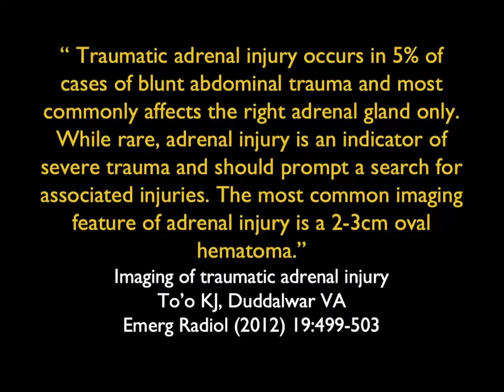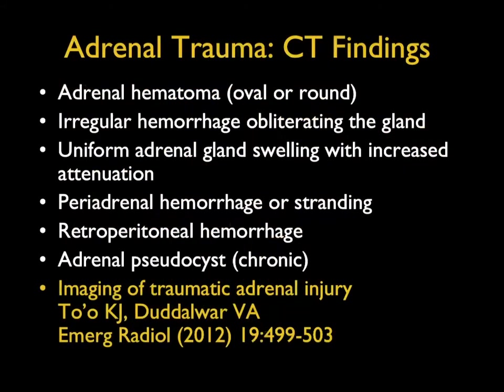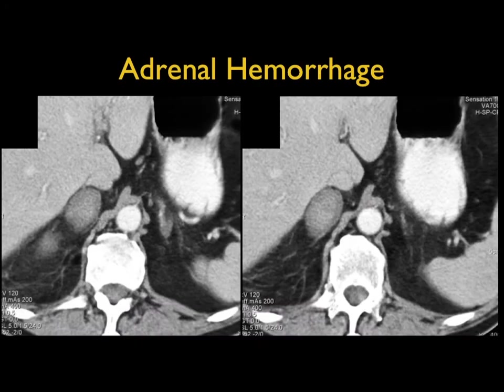Trauma accounts for about 5% of blunt abdominal cases of adrenal hemorrhage. It's almost always the right adrenal, and usually associated with liver and renal injury as well — not an isolated finding. Here's a very nice example: round, high-density lesion with stranding — adrenal hemorrhage post-trauma.